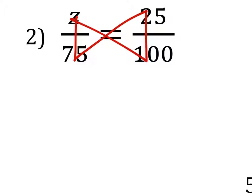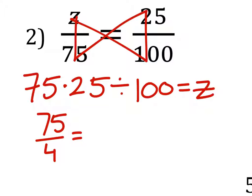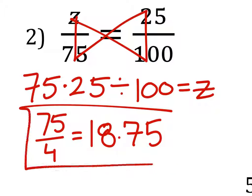So you go 75 times 25 divided by 100, which will equal Z. And if you put this directly into a calculator, you get 75 fourths, which is also equal to 18.75. This decimal doesn't go on for too long, so just write that whole thing.